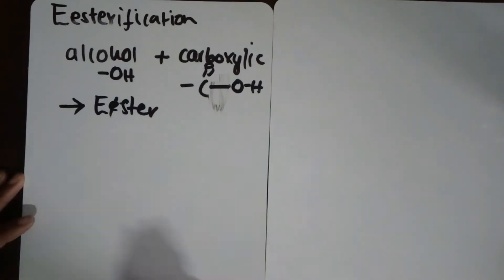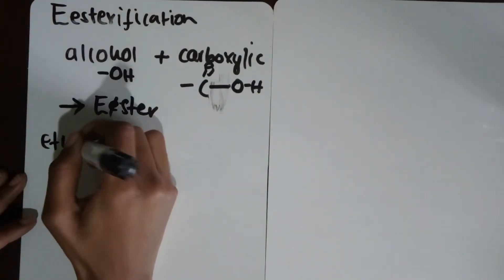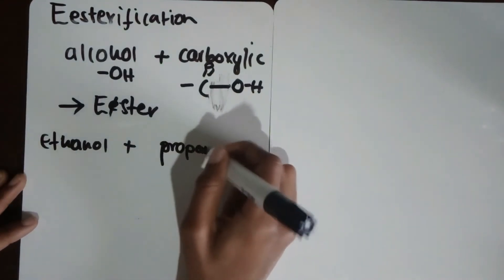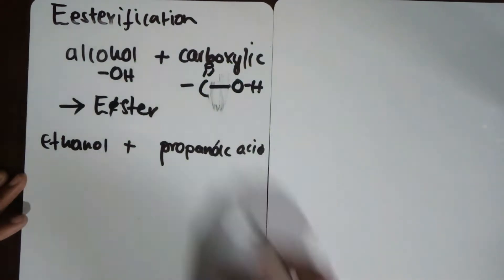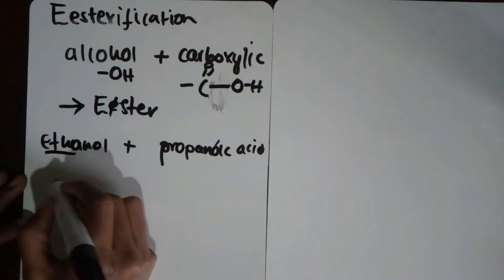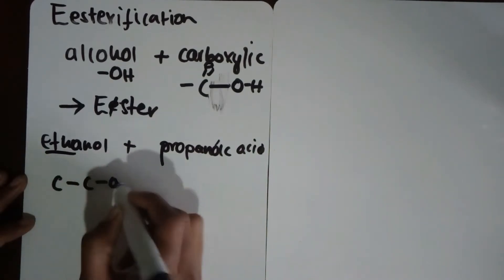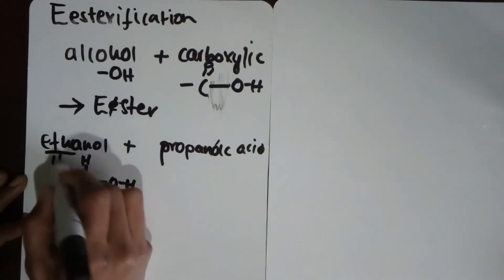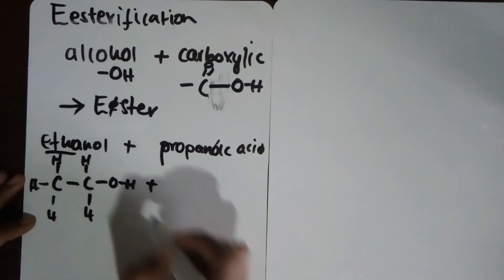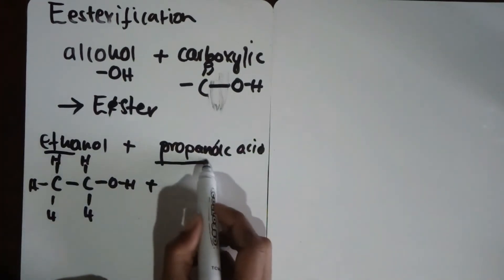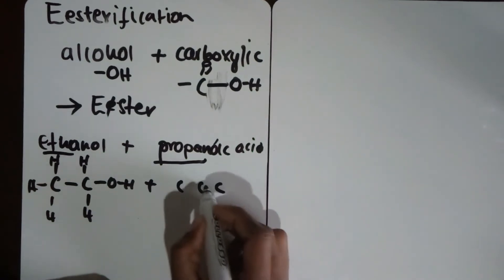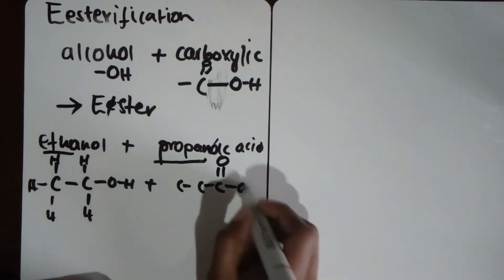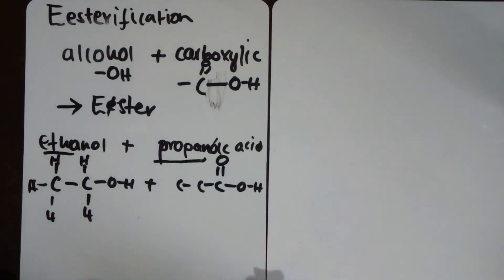Let us take an example: let's react ethanol plus propanoic acid. By now you should know how to draw these structures. Ethanol — 'eth-' means two carbons — and it has an O-H at the end to show it's an alcohol. We react it with propanoic acid: 'prop-' means three carbon atoms, and '-oic acid' means it's a carboxylic acid, identified by the carboxyl functional group.